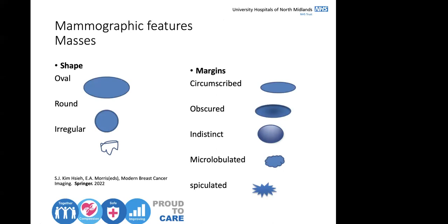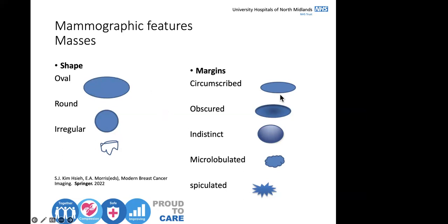On a mammogram, the first thing we look at is masses. Within masses there are different shapes and margins. When looking at margins — something could be obscured, not sharp on the edges. Things like cysts, a pocket with fluid, could come like that. Other margin descriptors include indistinct, microlobulated, or spiculated. When it looks spiculated — like a star sign — that is a worrying feature.